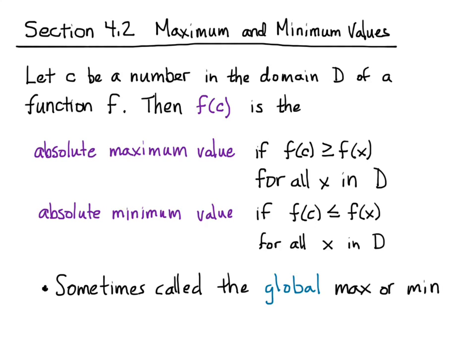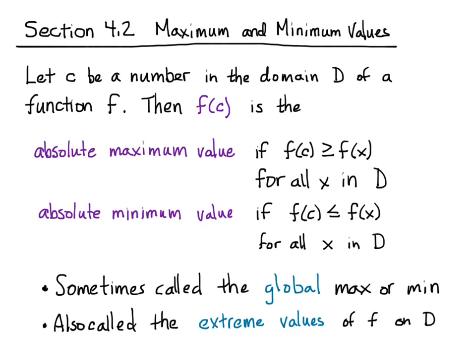Sometimes you'll see other authors call it the global minimum or maximum. That's a term you'll probably see more in things like computer programming where they talk about global variables. 'Global' in this sense means over the whole domain. We also call it the extreme value for the functions. We do have a theorem called the extreme value theorem, and that's exactly what it's talking about — the minimums and maximums of a function over a certain interval rather than over the whole domain. So the terms here are absolute maximum, absolute minimum, global mins and maxes, and extreme values.